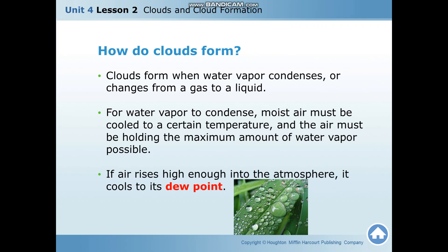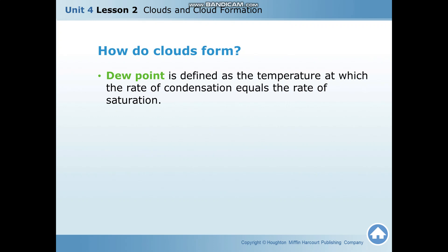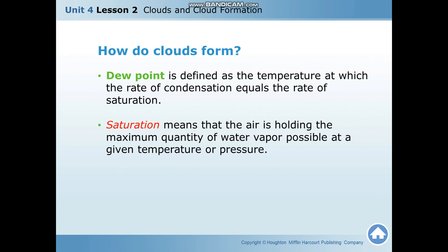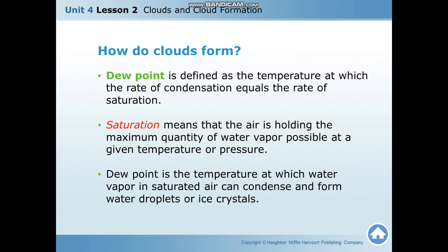If air rises high enough into the atmosphere, it cools to its dew point — just like the dew you can see in the picture. Dew point is defined as the temperature at which the rate of condensation equals the rate of saturation. Saturation means the air is holding the maximum quantity of water vapor possible at a given temperature or pressure. Dew point is the temperature at which water vapor in saturated air can condense and form water droplets or ice crystals.